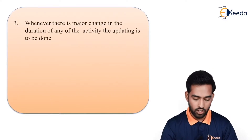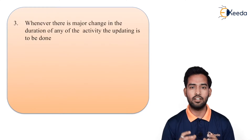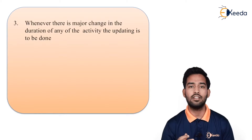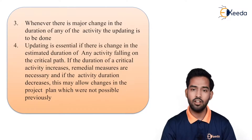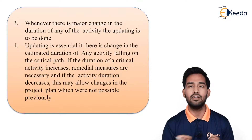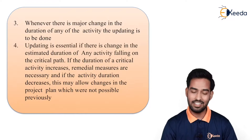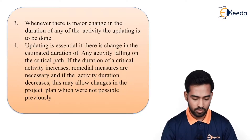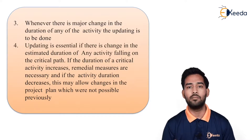Whenever there is a major change in the duration of any activity, updating must be done. If any event can be done at a particular time or will require more time and there is a large duration gap, we have to go for updating. Updating is essential if there is a change in the estimated duration of any activity falling on the critical path — this is a must. As we know, the critical path cannot be disturbed. If a critical activity is getting delayed, we have to go for updating. If the deviation of the critical activity increases, then remedial measures are necessary. And if the activity duration decreases, this may allow changes in the project plan which were not possible previously.